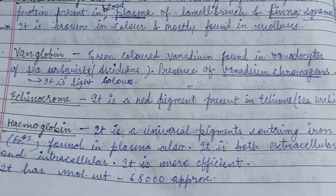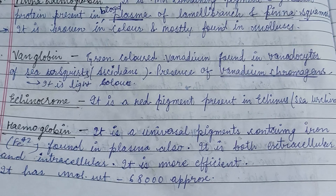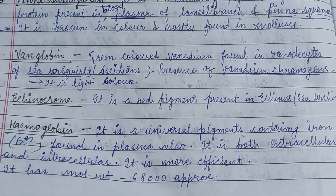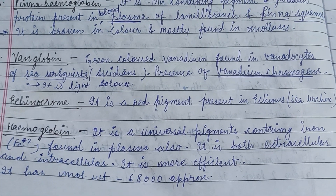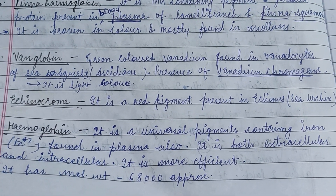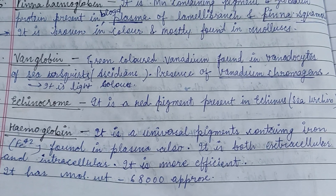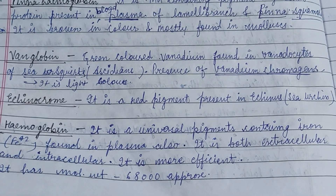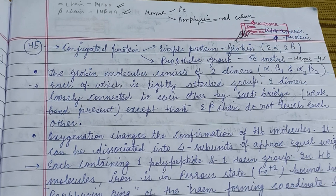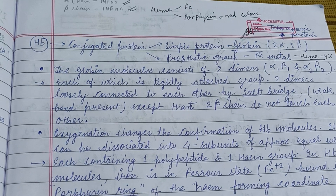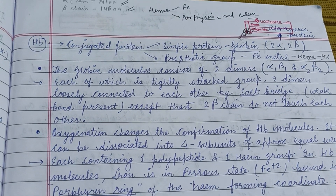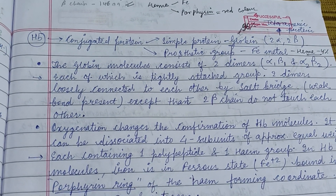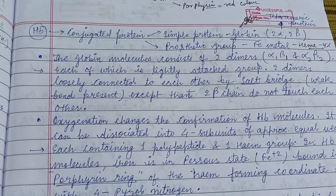Hemoglobin is a universal pigment containing iron, found in plasma. It is both extracellular as well as intracellular, and is more efficient with a molecular weight of approximately 68,000. Hemoglobin is a conjugated protein made up of simple protein globin, which constitutes about 96 percent,